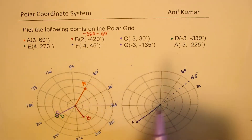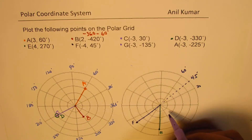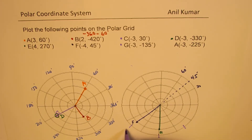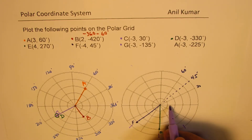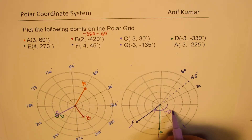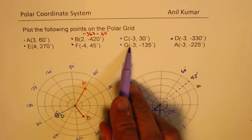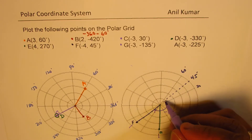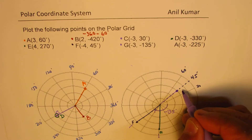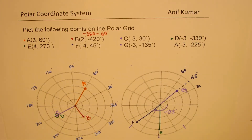Point G is (-3, -135°). Going minus 135 degrees in the clockwise direction: 45, 90, and minus 135 is right there. Now since r is also minus 3, we don't point in that direction — we point on the other side. So point G will be right there.